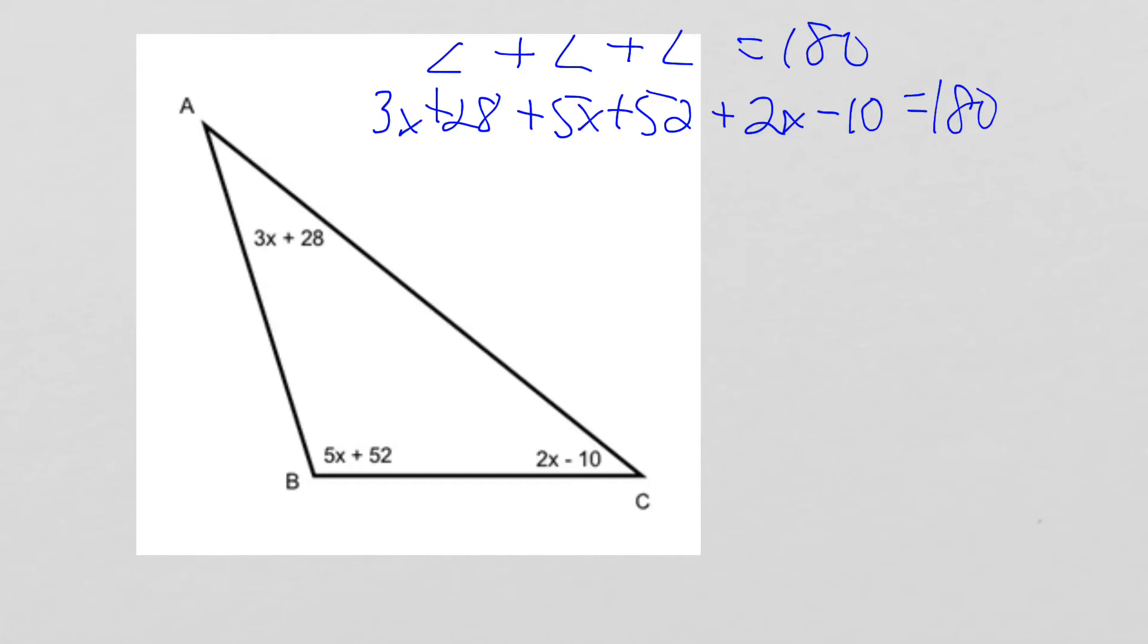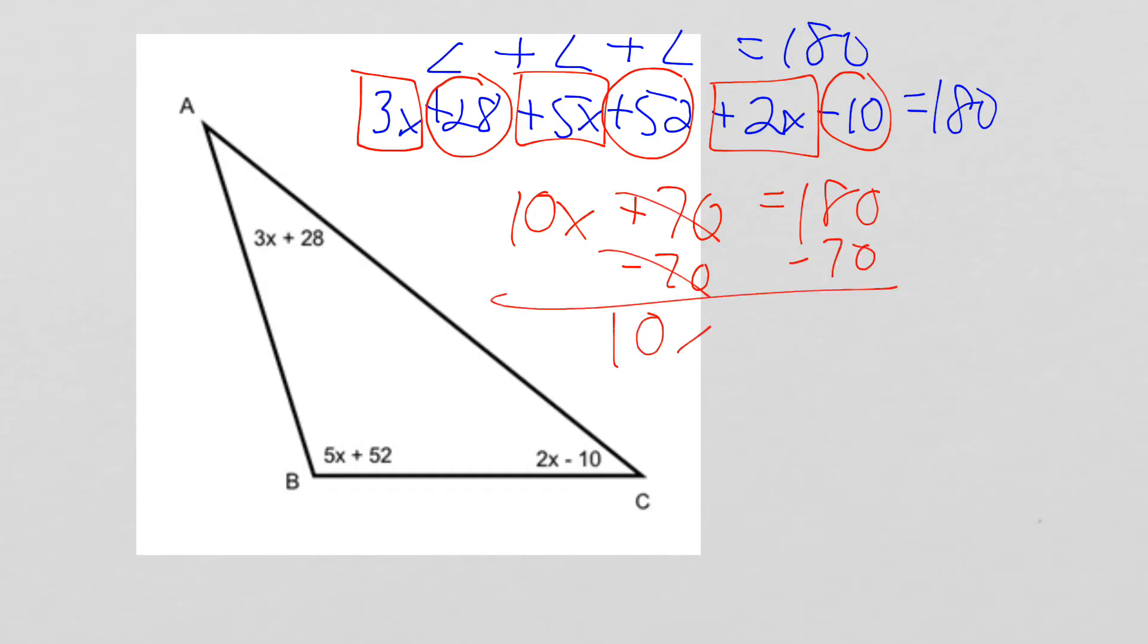I'm going to go ahead and combine like terms. So 3x plus 5x plus 2x. That's going to be 10x. And then we have plus 28 plus 52 and minus 10. That's going to end up being plus 70. So this all turns into 10x plus 70 equals 180. So you're going to have 10x equals 110. And ultimately, when we finish it off, we end up with x equals 11. That doesn't mean that they're 11 degrees. It just means x equals 11. Go ahead and plug 11 into each of those angles. You could figure out what the measure of each of them are. And I guarantee you that if you plugged in 11 and added up the number of degrees, you get 180 degrees. So that's another way we might use that idea of interior angles to solve a problem.